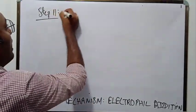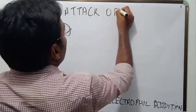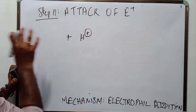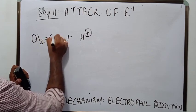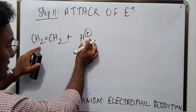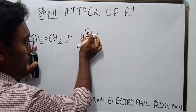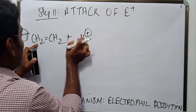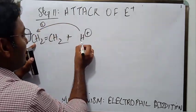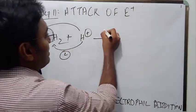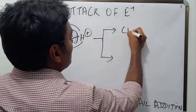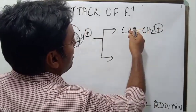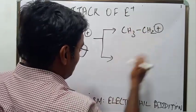Step two: attack of the electrophile. H+ is the electrophile, and it would attack the electron-rich symmetrical alkene. H+ has a positive charge; to become neutral it needs to take a pair of electrons. So it can attack the pi electrons — either it can take the pair of electrons from this carbon, or it can take the pair from the other carbon. In case one, if it takes from this carbon, the other carbon becomes positively charged because that carbon lost its electron pair to H.